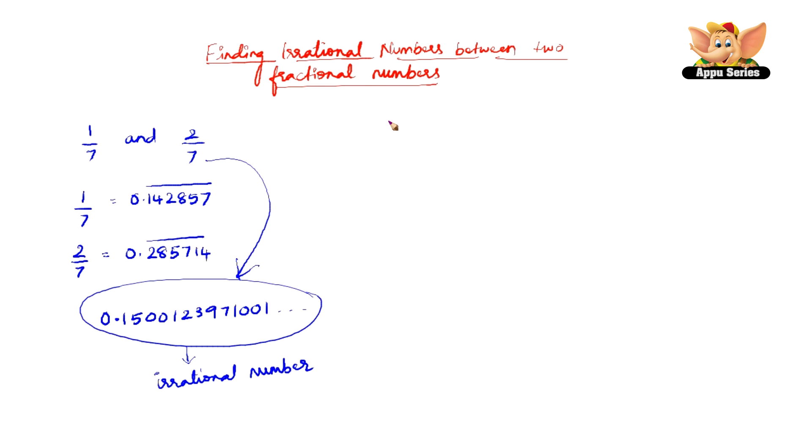Let's find three irrational numbers between 5/7 and 9/11. Same thing, let us first find what is 5/7.